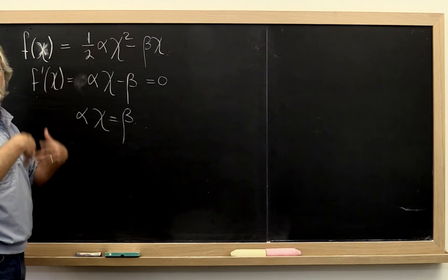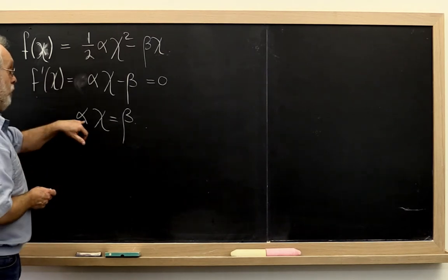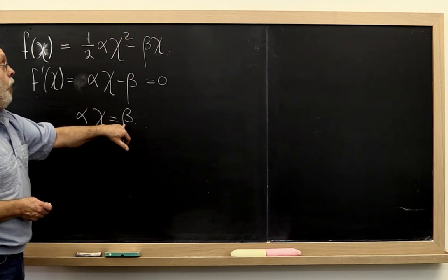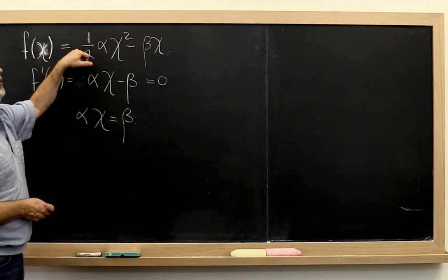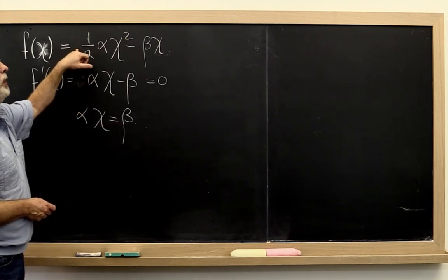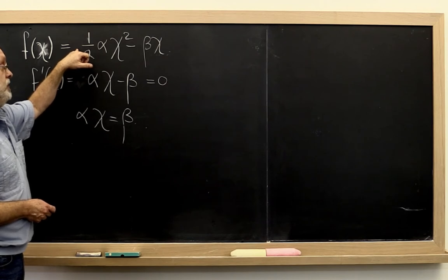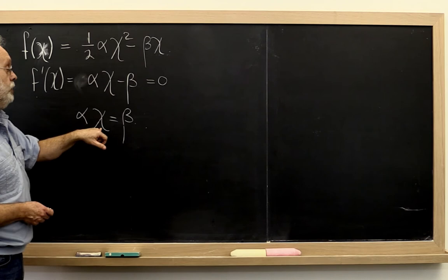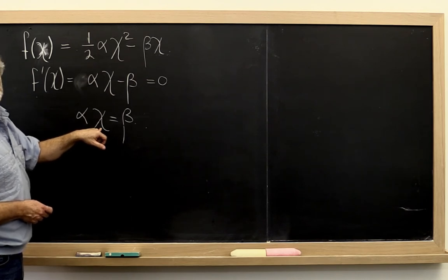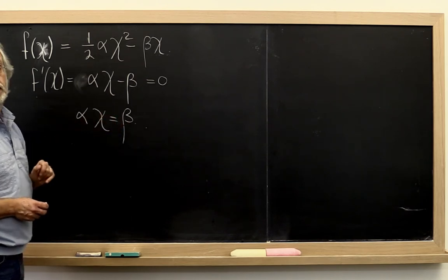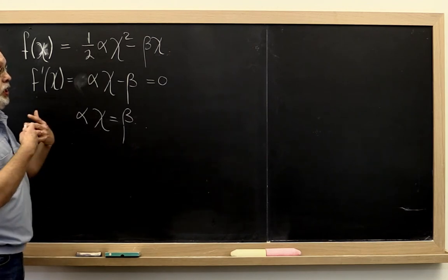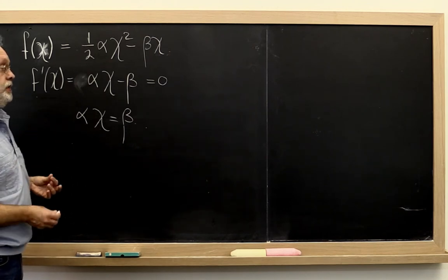Now we could of course start backwards. If we wanted to solve alpha chi equals beta, then we can construct the second-degree polynomial that has the property that its minimum is at the value of chi where alpha times chi is equal to beta. So now let's see how we can use that to solve linear systems.